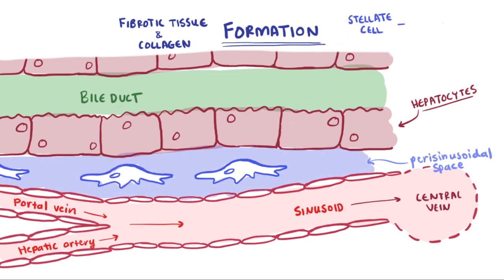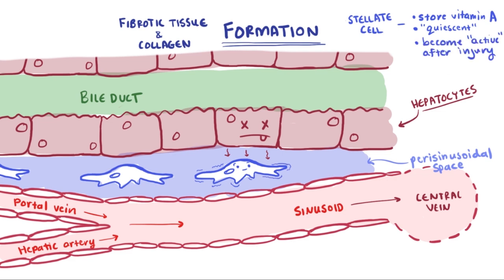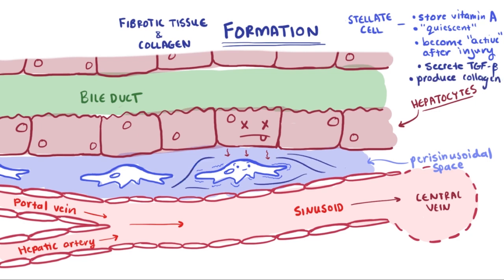In healthy tissue, stellate cells' main function is to store vitamin A, and are otherwise considered quiescent, or dormant. When hepatocytes are injured, they secrete paracrine factors that activate and change the stellate cells. When activated, these stellate cells lose vitamin A, proliferate, and start secreting transforming growth factor beta-1, or TGF-beta, which causes them to produce collagen — the main ingredient in extracellular matrix, fibrosis, and scar tissue.